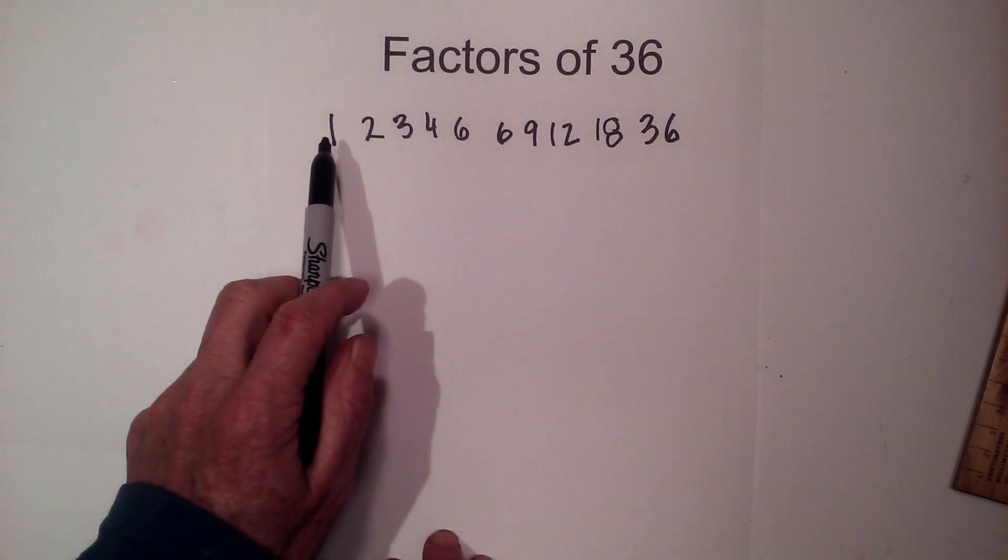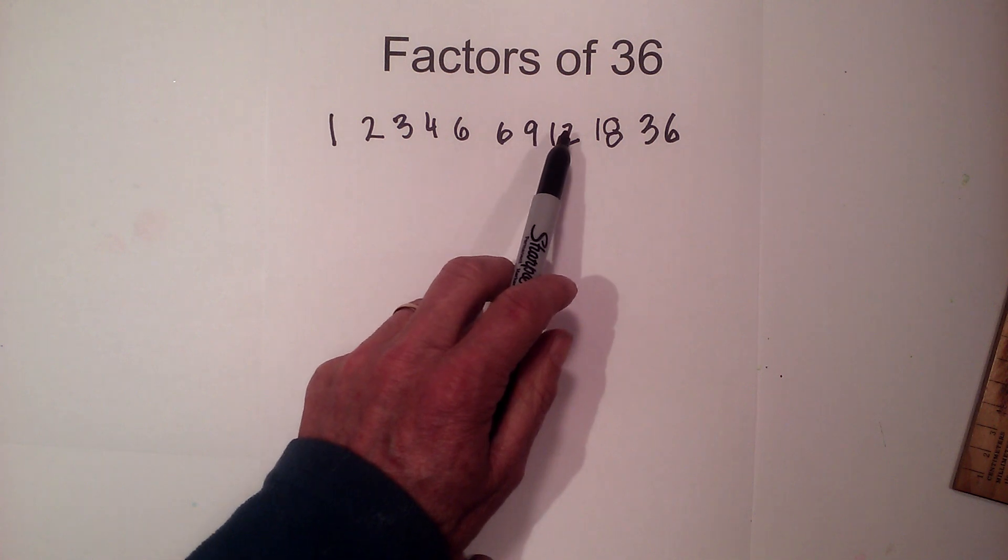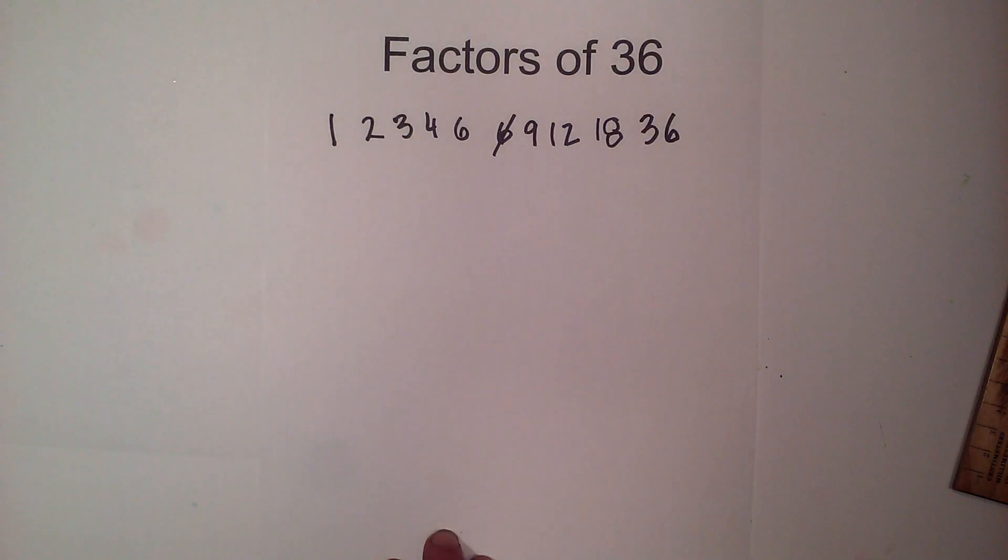So here are the factors 1, 2, 3, 4, 6, 9, 12, 18, 36 so let me scratch this out so it's not confusing.